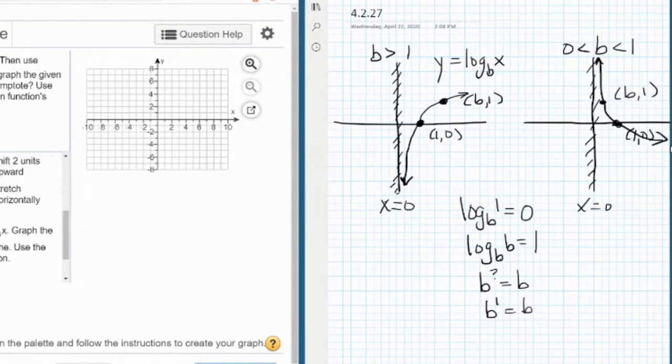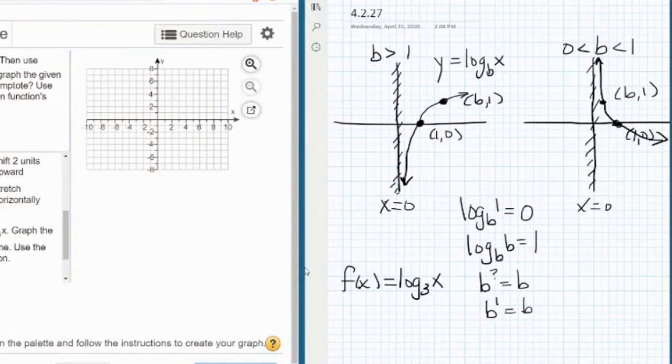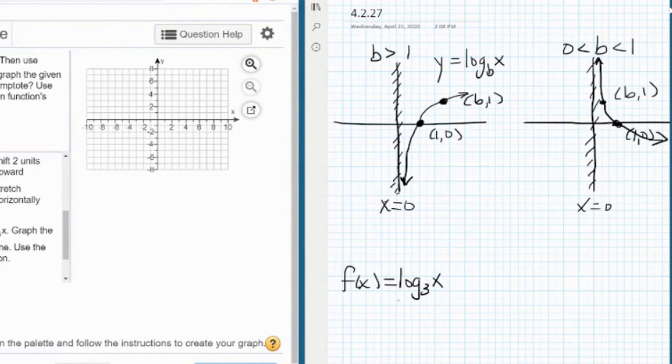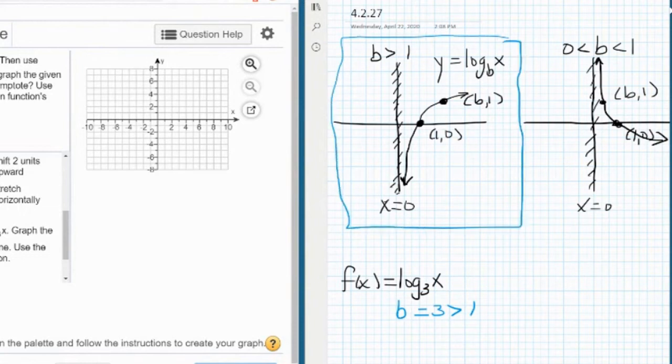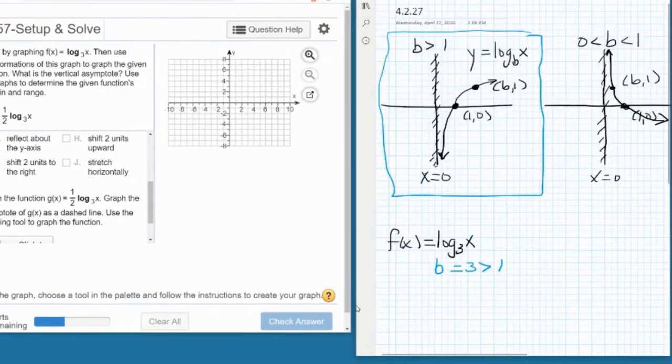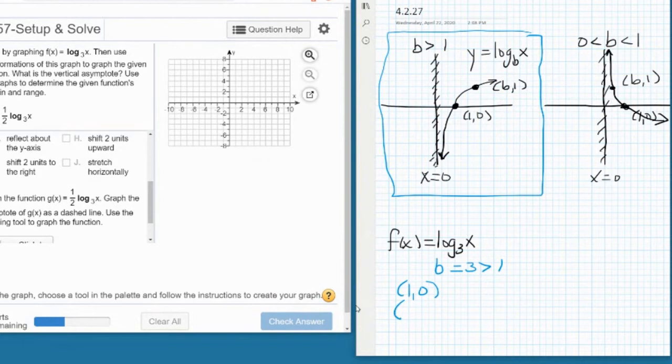So in our problem, we're trying to use the graph of f(x) = log base 3 of x to get the graph of g(x) = 1/2 log base 3 of x. So b is 3, which is greater than 1. So you know it's going to look like the function on the left. So the key points on this graph are going to be (1, 0). And instead of (b, 1), this time it'll be what? The (3, 1). 3, 1, exactly.